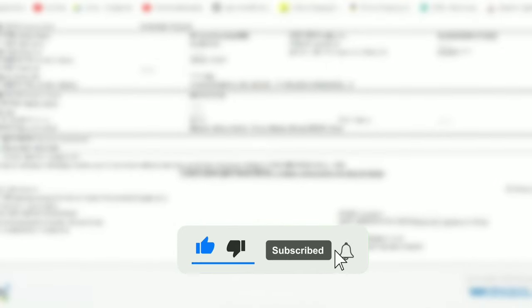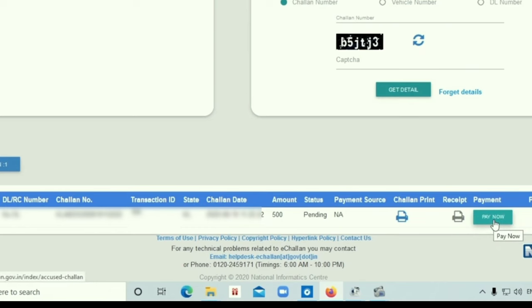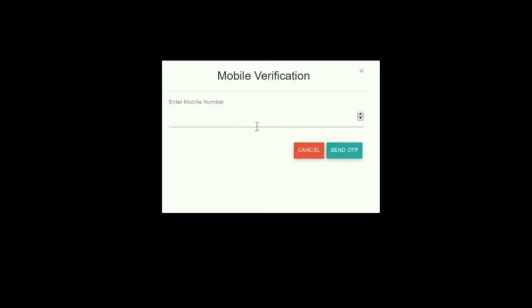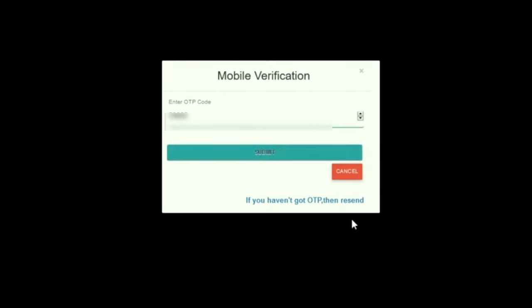You can see the challan document and the traffic rule violation. Find the equity number and click on payment. Click to send the OTP to the tool.